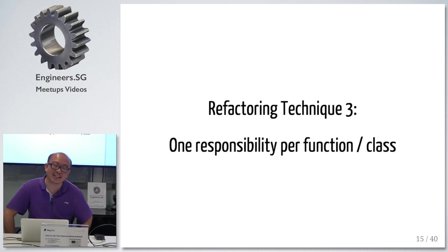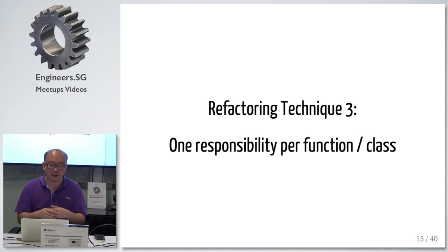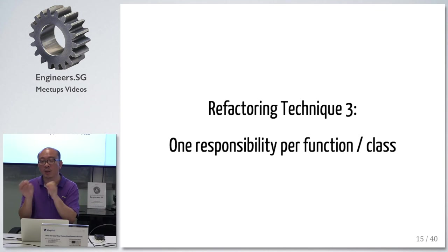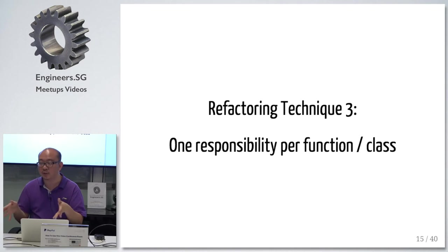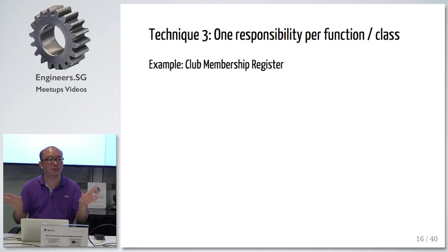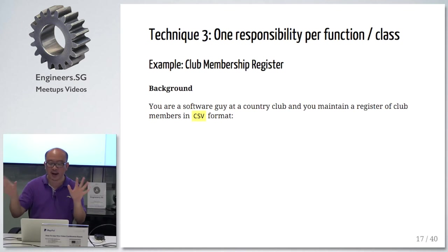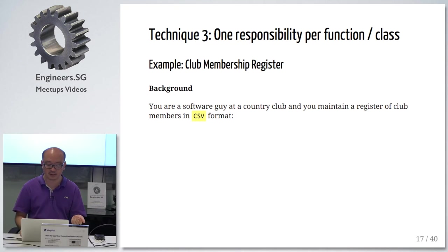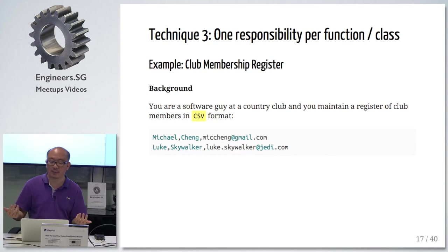So that's two tips down. The third technique is that when we refactor code, we try to write your functions such that each function only has one responsibility — it takes in certain things, it only does one thing, and it gives you the result that you need. I'll use an example: a club membership register. Say you run a country club — some club. You're the software guy tasked to maintain the club membership register as a CSV file. Luke Skywalker is a good friend of mine in this example.